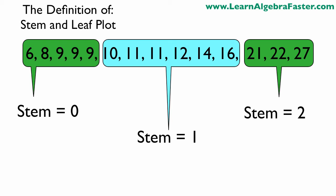Now on the left side you see 6, 8, 9, 9, and 9 - they don't have two digits so we assume the stem is 0 because 06 is the same as just 6. In the middle we have everything listed from 10 to 19, they all share the stem of 1 because it's the digit on the left. And the last three, the stem is 2 because it's 21, 22, and 27.